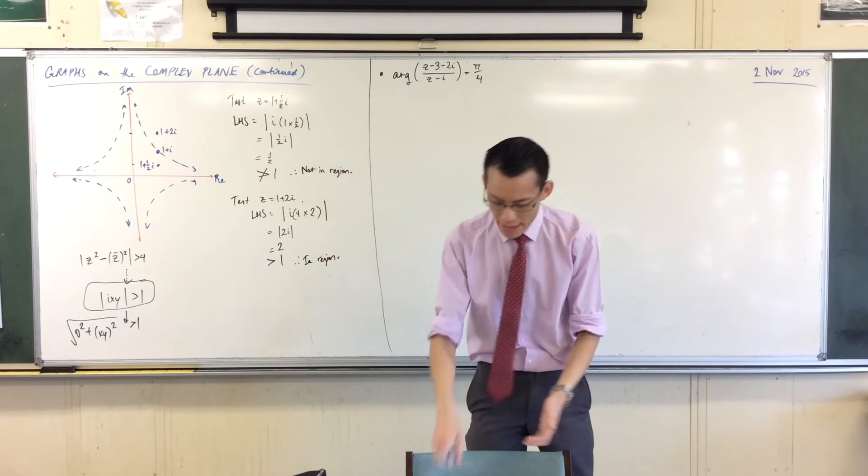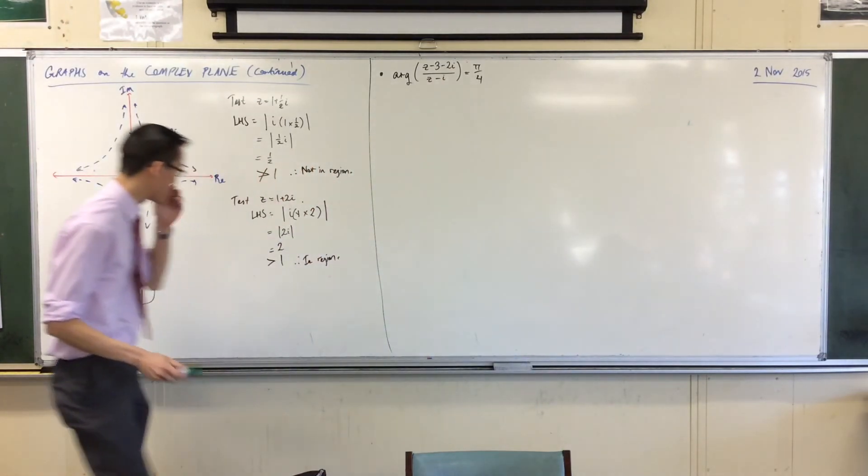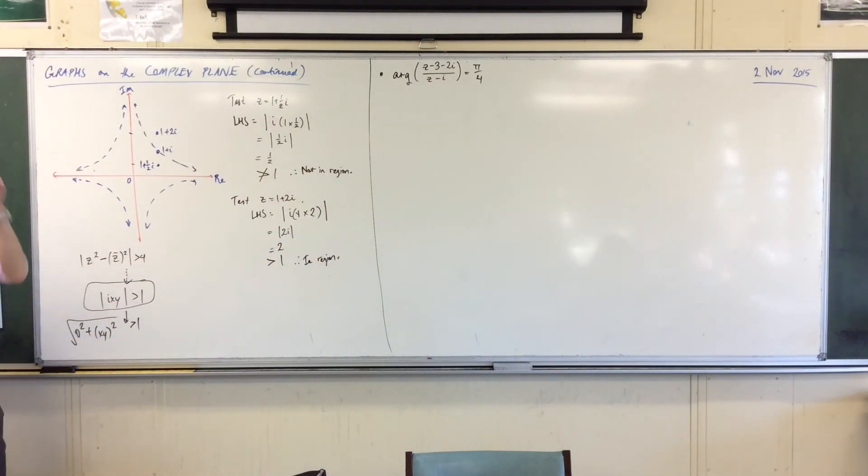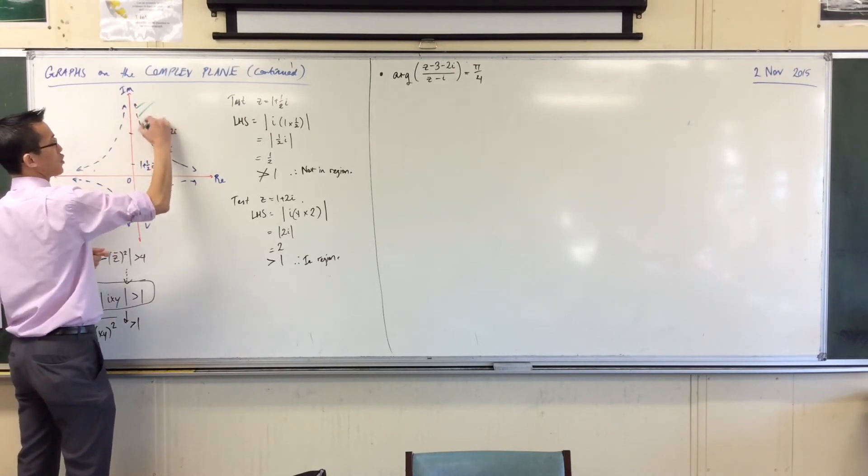Okay, so from there, that's enough numerical proof, I think, to be able to say, this is in, this is out, I'm going to shade up here, like so.